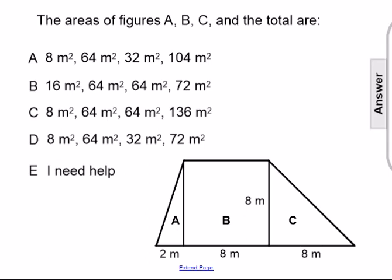The areas of figures A, B, C in the total are: A. 8, 64, 32, and 104 square meters. B. 16, 64, 64, and 72 square meters.